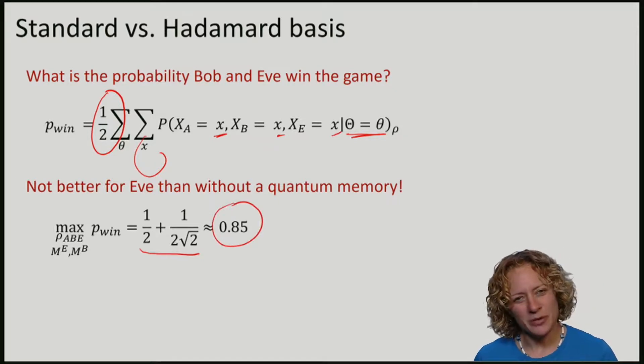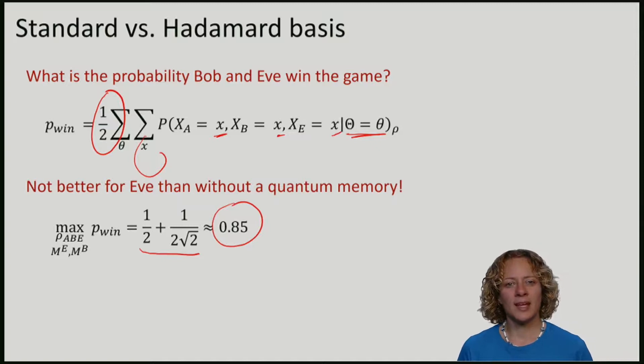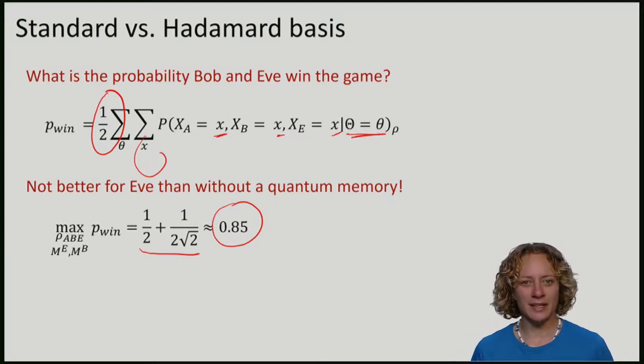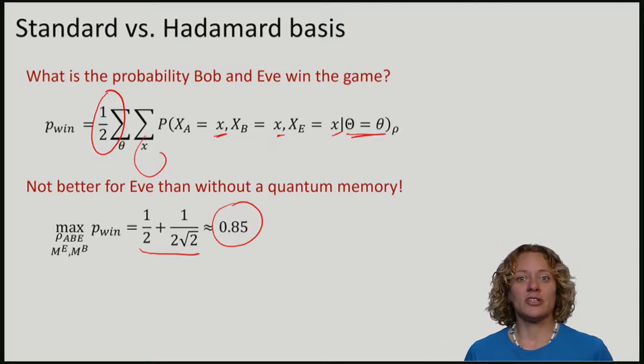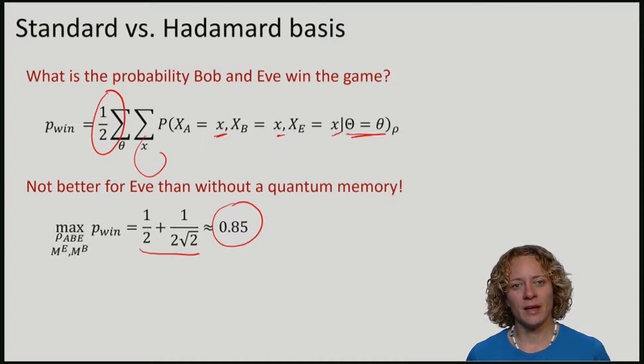You have seen this number before. This was exactly the probability that Eve managed to guess x if she had no entanglement at all. We thus see that introducing Bob and demanding that they all give the same answer introduces an extremely strong constraint. We are back to the situation where Eve essentially has no quantum memory, where Eve has maximum uncertainty.